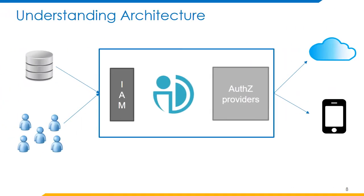Understanding the architecture of PlaneID: The HR system is the feed for any identity and access management product because it contains the employee data. PlaneID is connected to any identity management products like Active Directory, SailPoint, or similar tools, as well as device management which contains device information and IoT things. These are connected to HR data and comprise the data of the entire organization. They are then integrated to PlaneID, and PlaneID is integrated with an authorization provider. Authorization providers will communicate with other mobile, cloud, or on-premise applications.